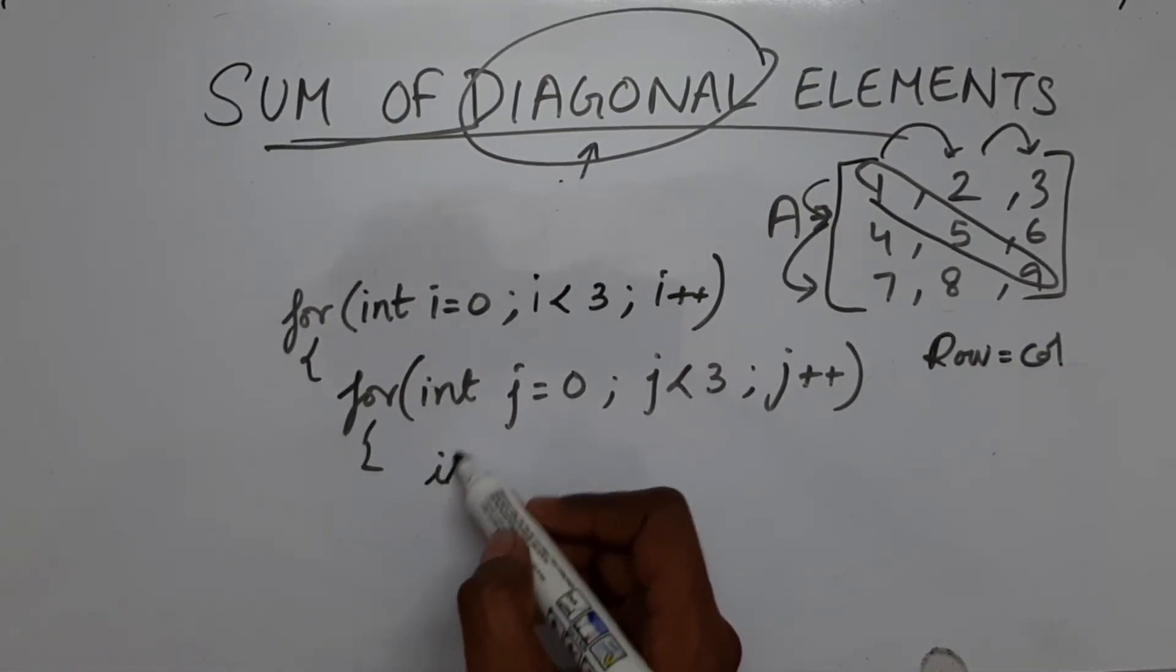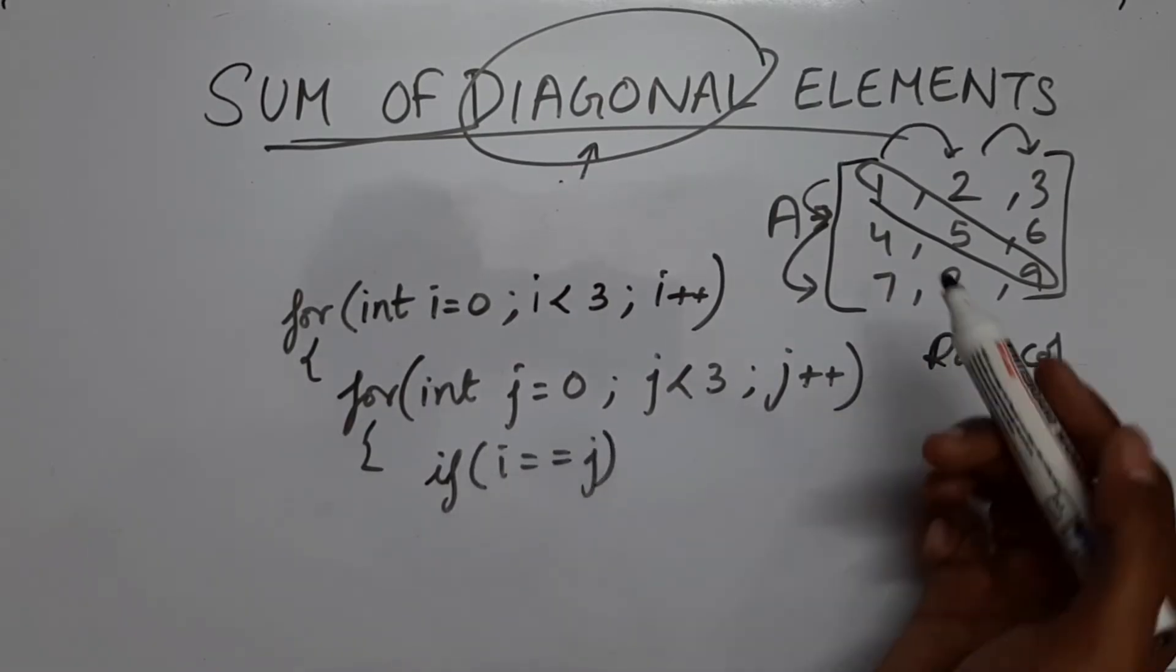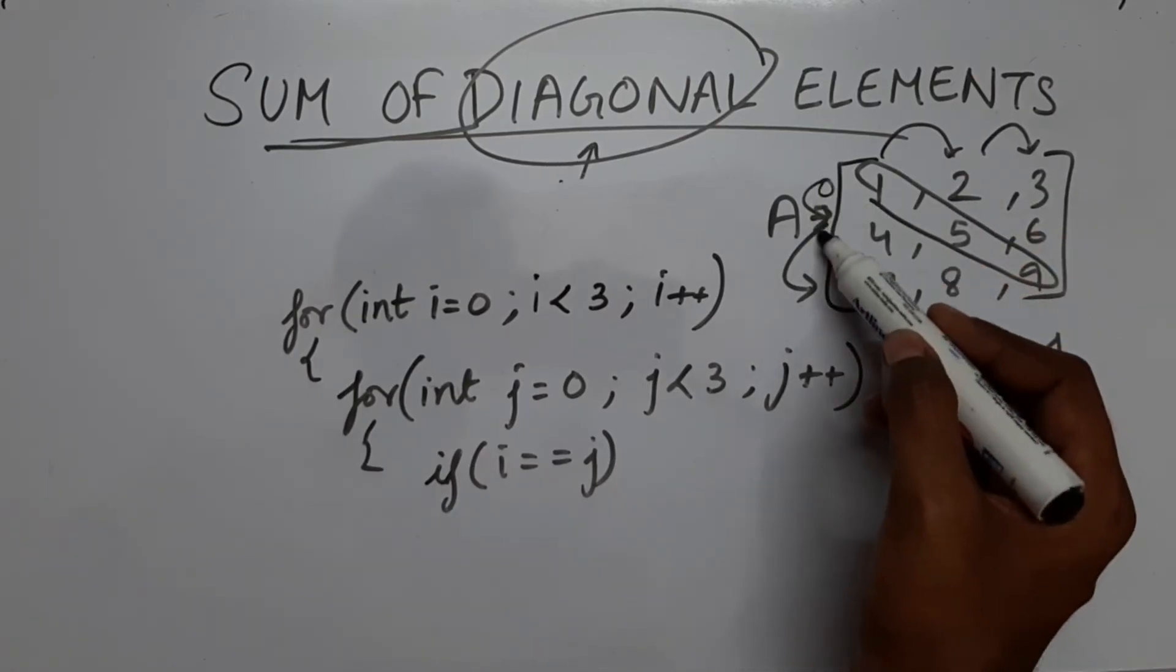We saw that whatever value is present in row is the value present in column. So I am going to say if i is equal equal j. You got it right. So this is 0, 1 and 2.